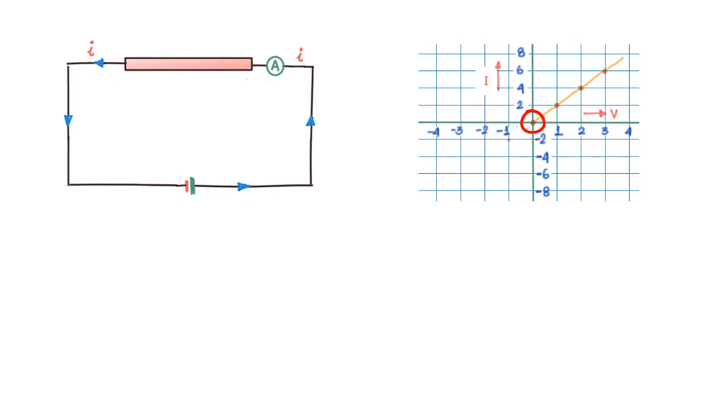When we repeat this exercise of increasing voltage and measuring current, we again find the same absolute values and therefore we get a line like this in the reverse direction.